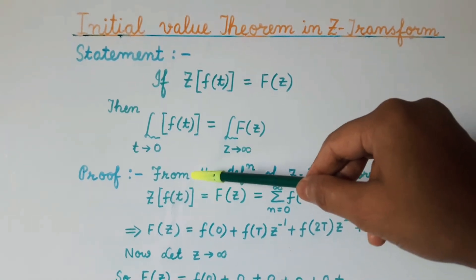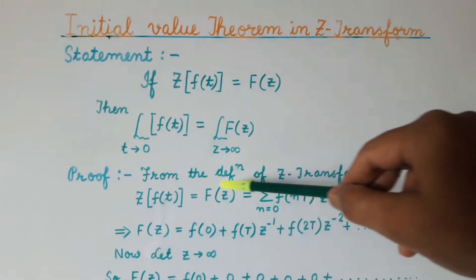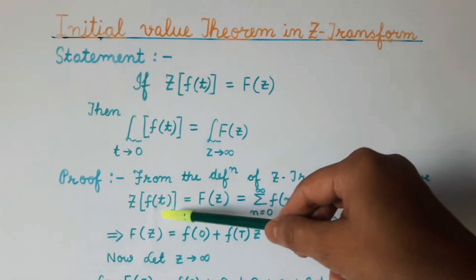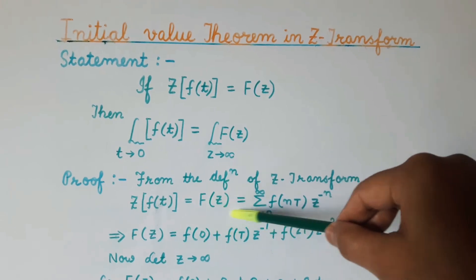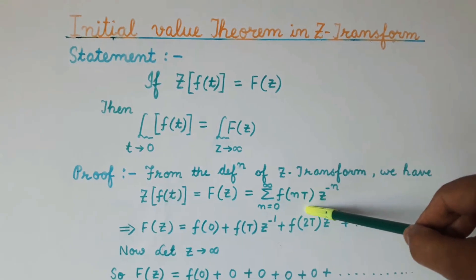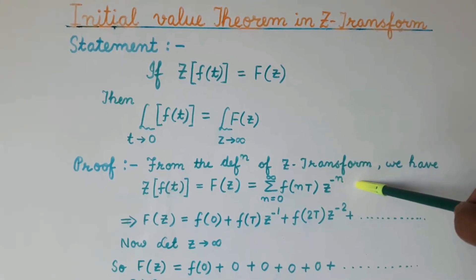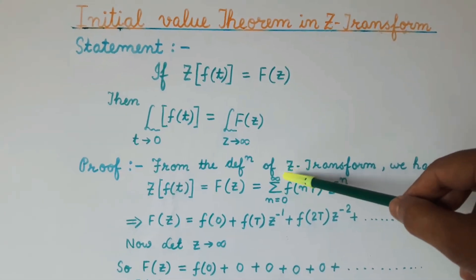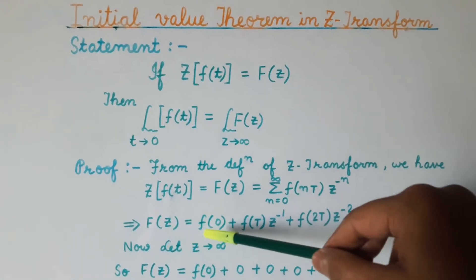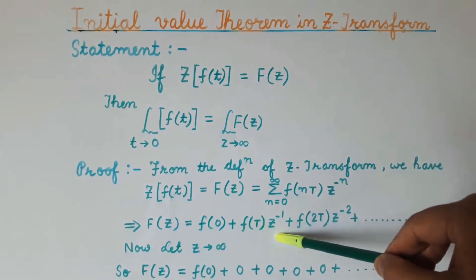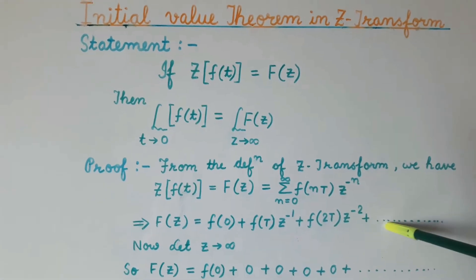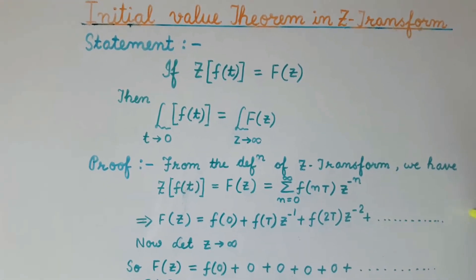Let us see the proof of the initial value theorem. From the definition of the Z-transform, we know that the Z-transform of f(t) can be written as F(z), and this is equal to summation n equals 0 to infinity of f(nT) into z to the power minus n. Substituting different values of n, we get F(z) equal to f(0) plus f(T) z to the power minus 1 plus f(2T) z to the power minus 2 plus f(3T) z to the power minus 3, and so on.